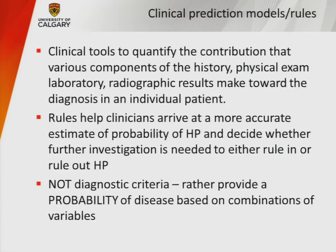A different approach is the creation of clinical prediction models — tools that quantify and weight the contribution of various components, such as exposure history, crackles on exam, CT findings, and positive serum precipitins. These rules help arrive at a more accurate estimate of probability and decide whether to proceed to surgical biopsy. Importantly, clinical prediction models are not diagnostic criteria; they provide a probability based on combinations of findings.